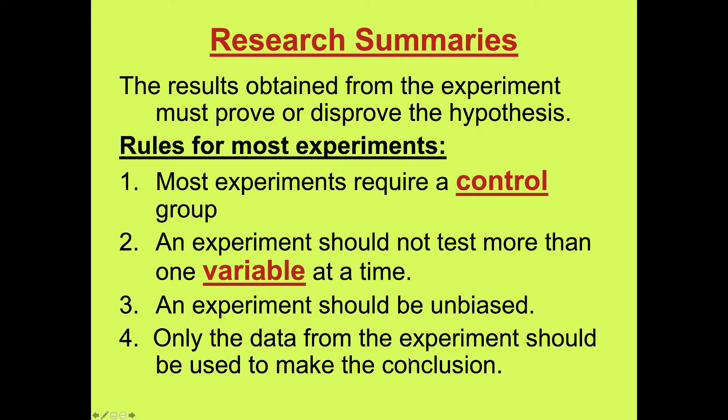The results obtained from the experiment will either cause you to reject or accept the hypothesis. Rejecting the hypothesis means you disprove it; accepting it means you've proven it. Most properly designed experiments will have a control group. The experiment should not test more than one variable at a time — you have to vary only one aspect to make direct correlations. An experiment should not be designed to prove what you already believe, and only data from the experiment should be used in the conclusion.